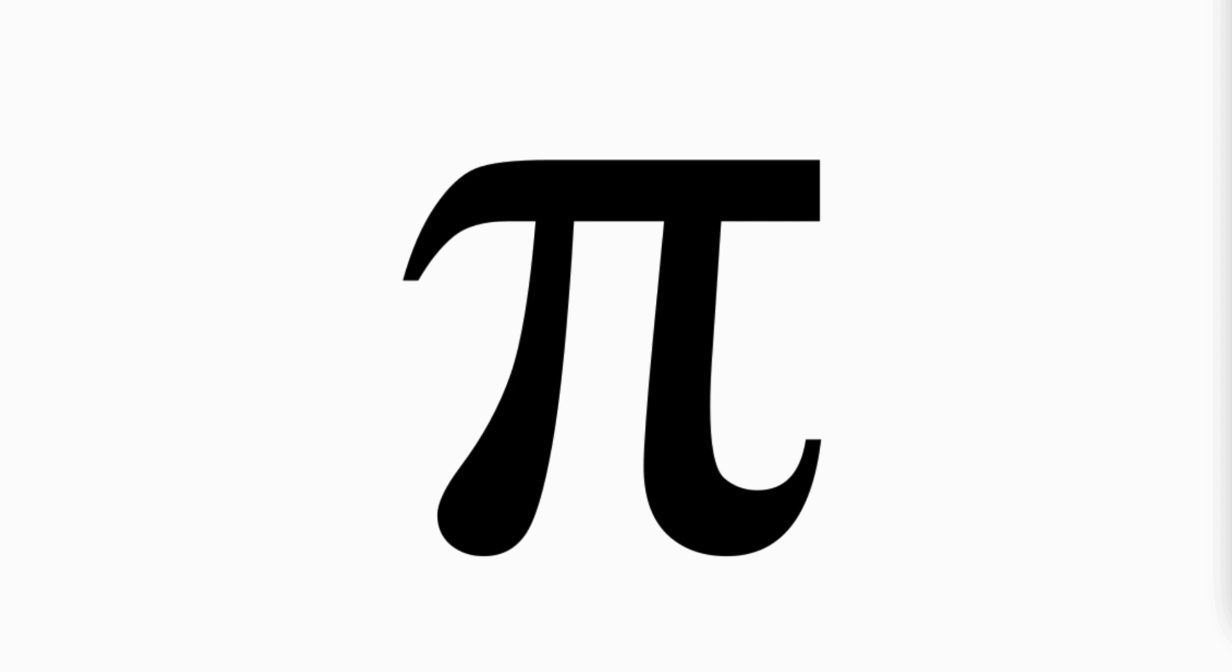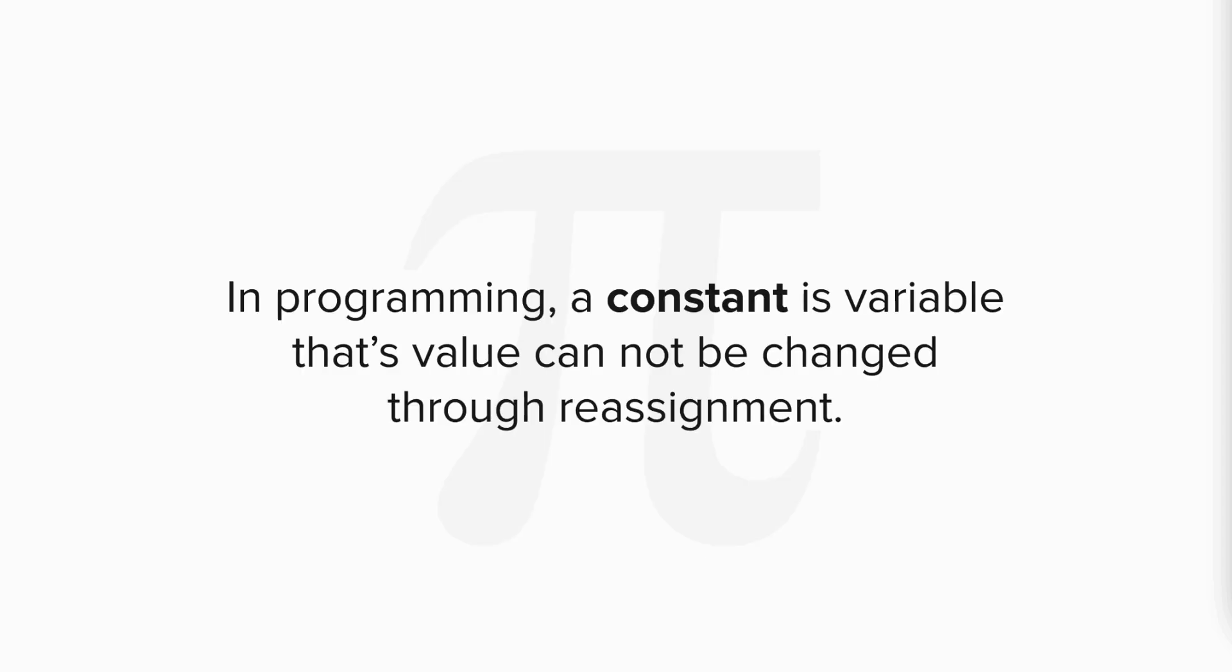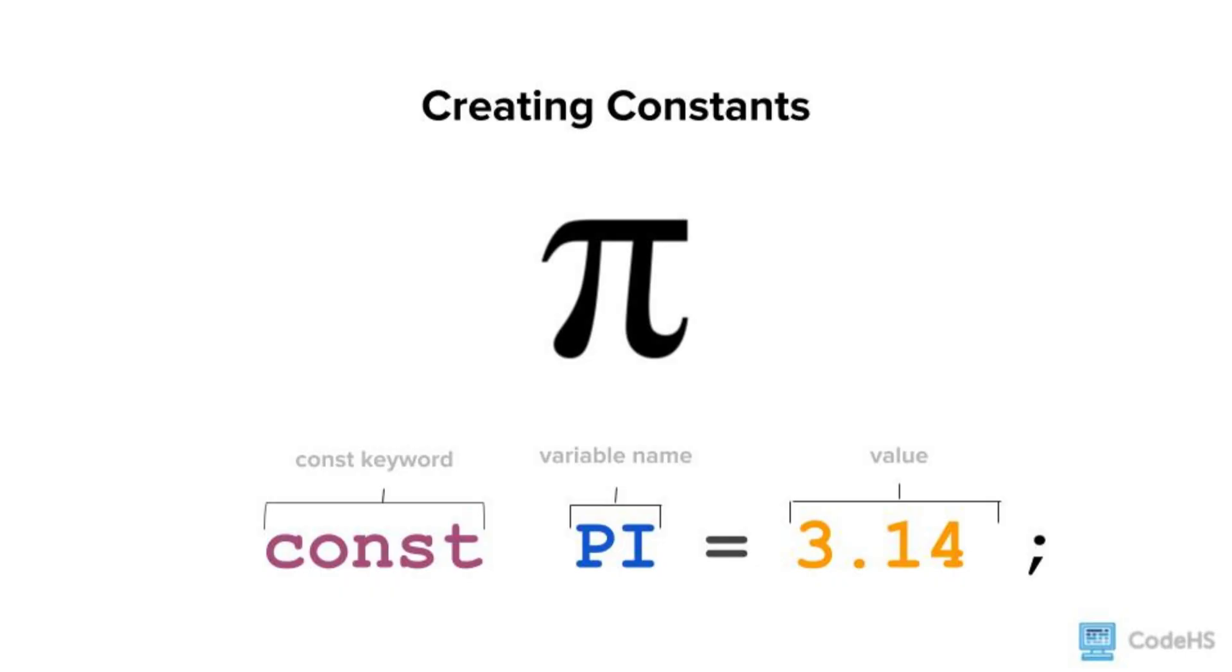There are many useful constants used in mathematics, like pi. These values are a single universally accepted value. Similarly, we can create constants in our programs. In programming, a constant is a variable whose value cannot be changed through reassignment. JavaScript supports creating constants.